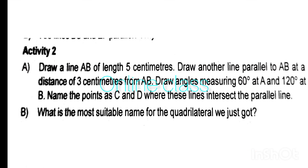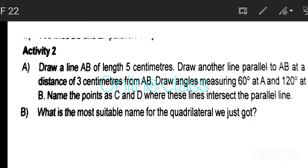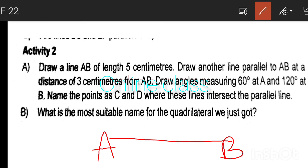Draw a line AB of length 5 cm. Draw another line parallel to AB at a distance of 3 cm from AB. Draw angles measuring 60 degrees at A and 120 degrees at B. Name the points C and D where these lines intersect the parallel line.